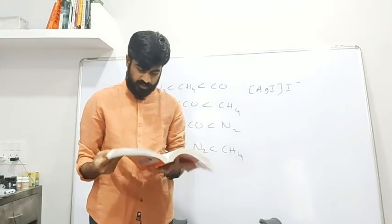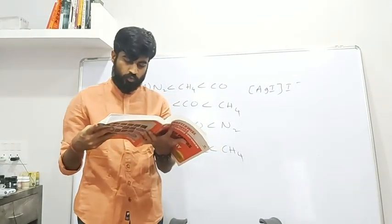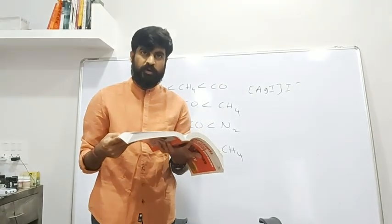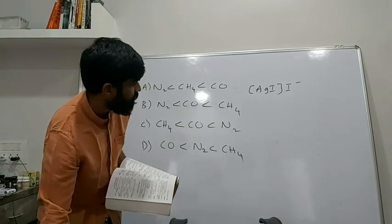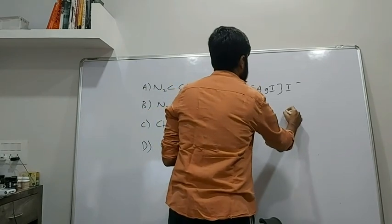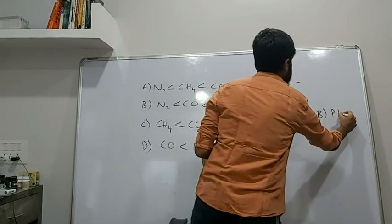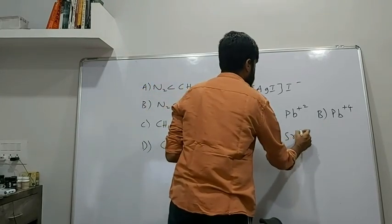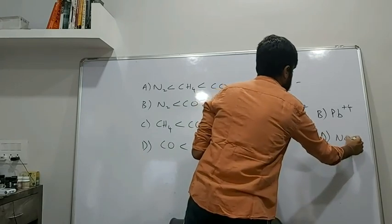Next question: Which of the following has the maximum value of flocculating power? Option A: Pb²⁺. Option B: Pb⁴⁺. Option C: Sr²⁺. Option D: Na⁺.